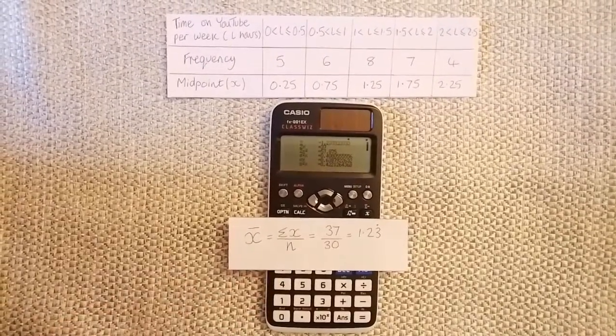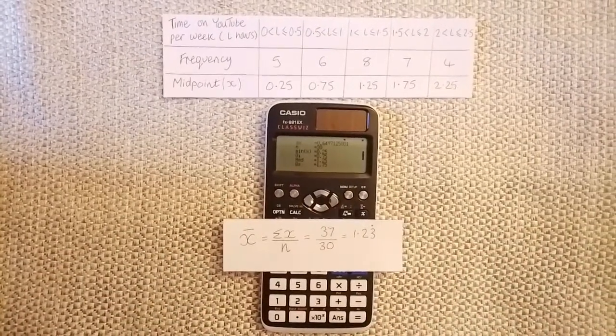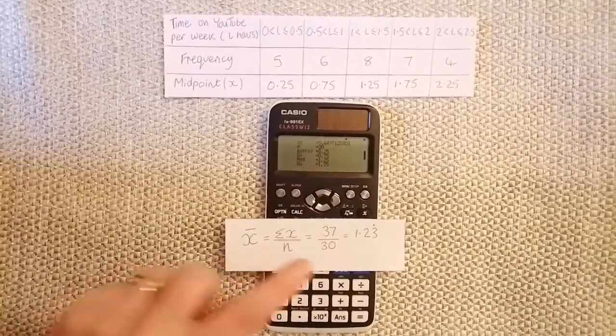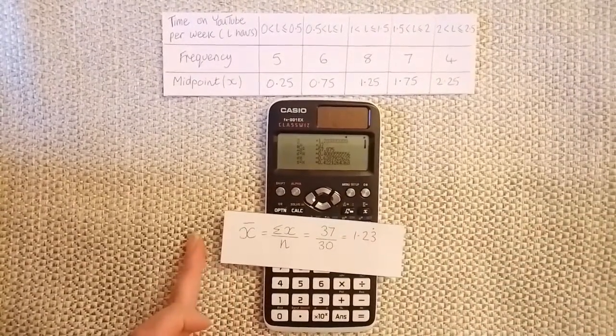over n, which can be found if you scroll down on the second screen. And this agrees with x bar on the summary data.